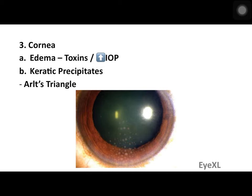The next sign is keratic precipitates — depositions of immune complexes that follow a pattern known as Arlt's triangle. This is a triangle in the inferior part of the anterior chamber where immune complexes deposit on the endothelial side. They settle inferiorly due to gravity, as immune complexes are macroscopic structures with weight. The triangular pattern is due to convection currents present in the aqueous humor, which is constantly being produced and excreted.